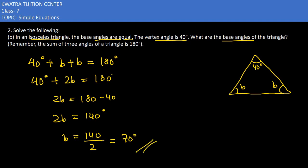So 2b equals 140. Dividing by 2, b equals 70 degrees. That would be the base angle of the triangle.